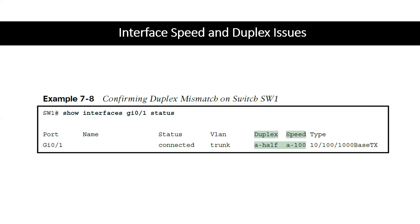When you do show interface status on Switch 1, you'll see the 'a-' prefix indicating it used auto-negotiation on its side. But it won't match the full duplex set on the other side — it defaults to half based on IEEE. The result is a duplex mismatch.